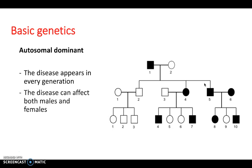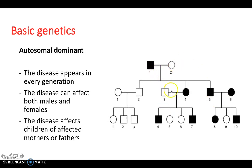Autosomal dominant appears in every generation. Again, it can affect both males and females equally. And the disease affects children of affected mothers or fathers. So it's passed on directly from the parents. An example of this is Huntington's.